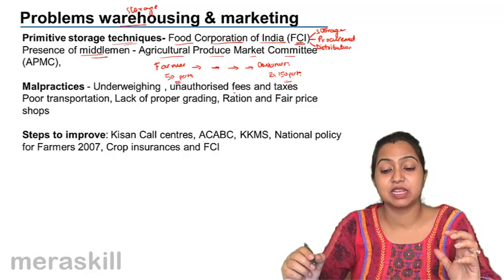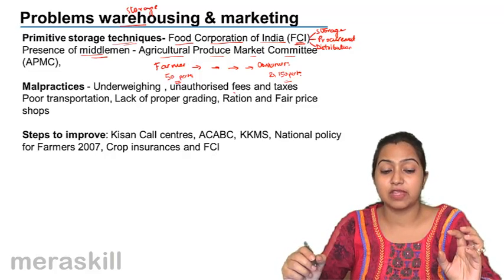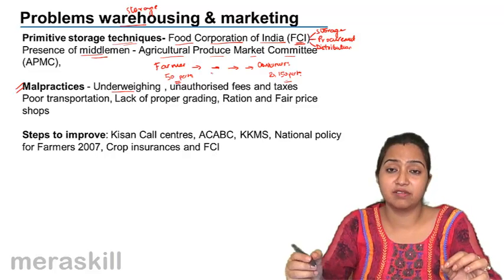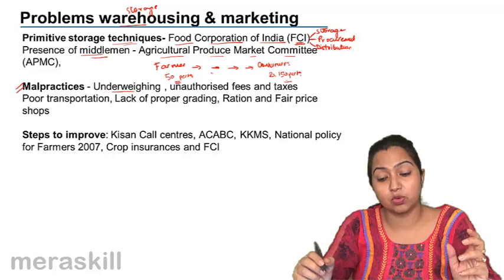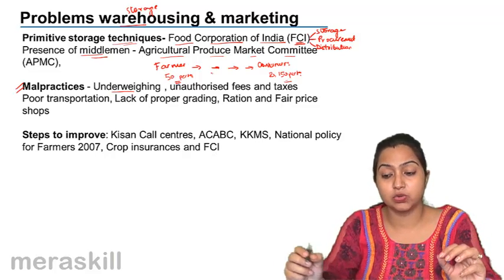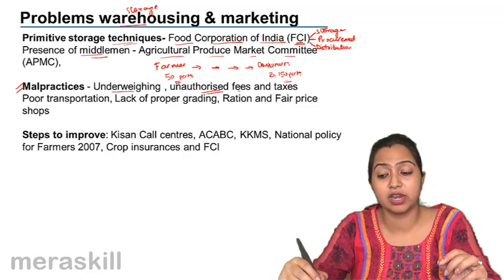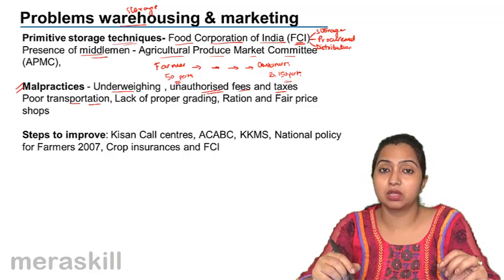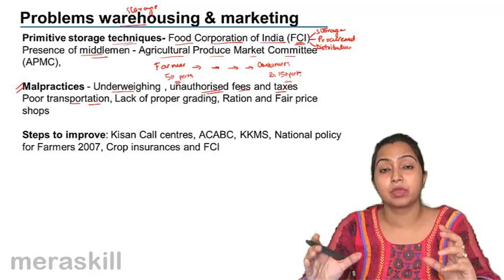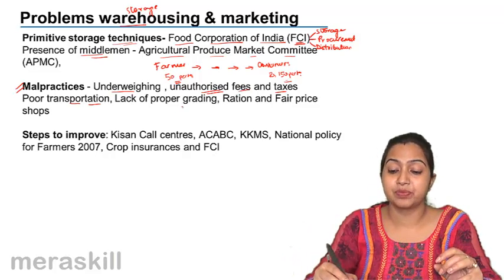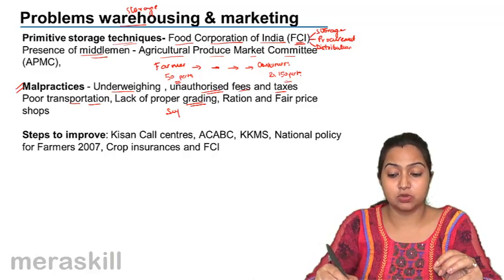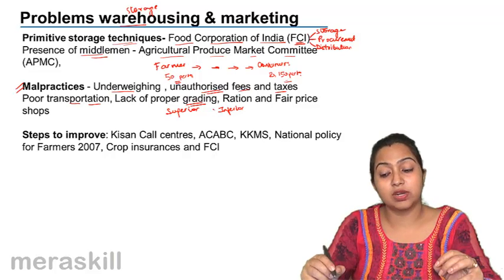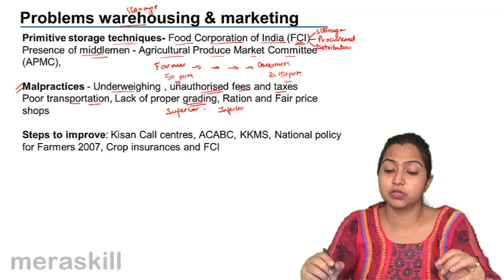The APMC system still has problems — it operates like a government monopoly. There are also many malpractices: under-weighing of produce, unauthorized fees and taxes levied on farmers, poor transportation facilities causing produce to spoil, and lack of proper grading — no distinction between superior and inferior quality goods, both sold at the same price, giving farmers no motivation to produce better quality.